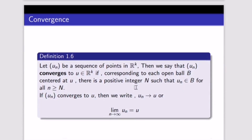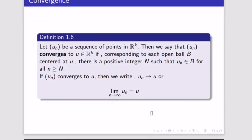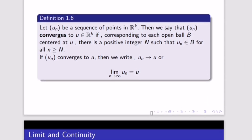These topics — convergence and divergence — are from further calculus with analysis. If uₙ converges to u, we write uₙ → u or the limit of uₙ as n approaches infinity equals u. In the next video I'll talk about limits and continuity and give simple fast methods to solve them. Thank you for watching this introduction video.